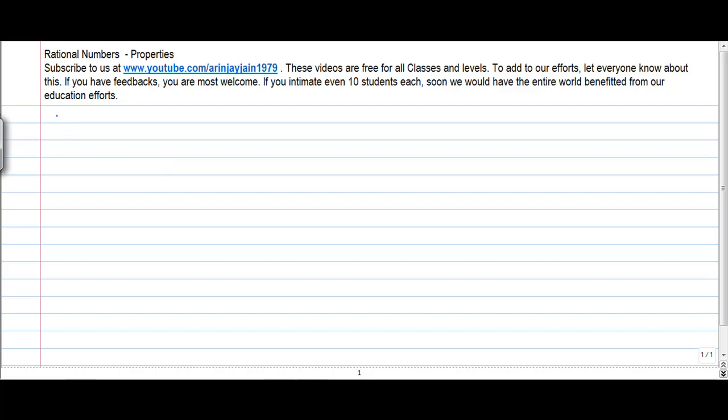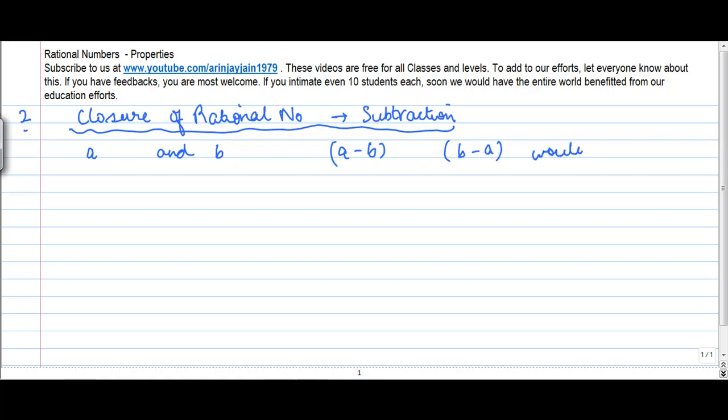Let's take property number 2, which is closure of rational numbers under subtraction. What does this mean? This means that if I take a rational number a and a rational number b, whether a minus b or b minus a would be a rational number.